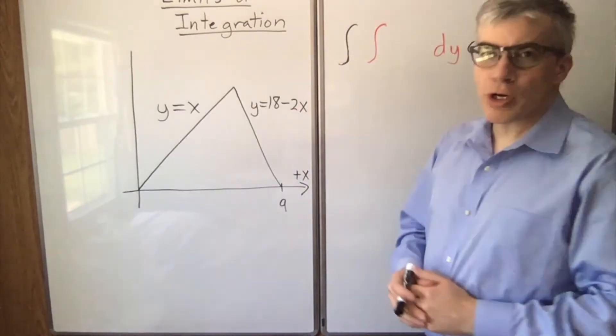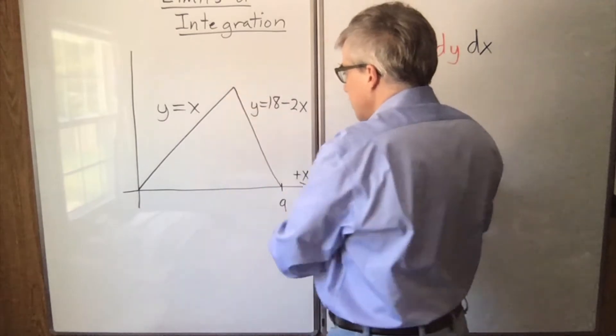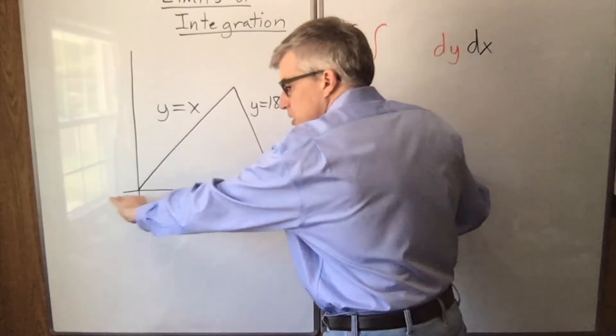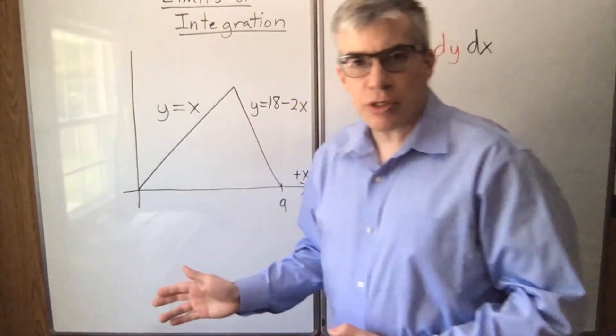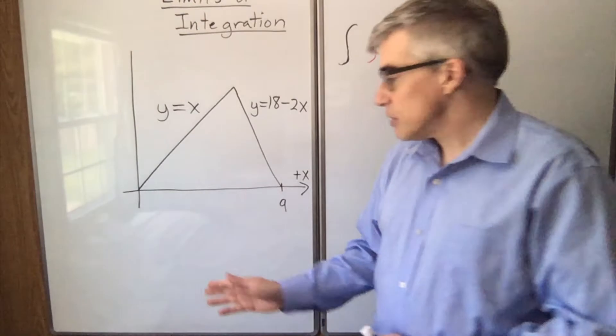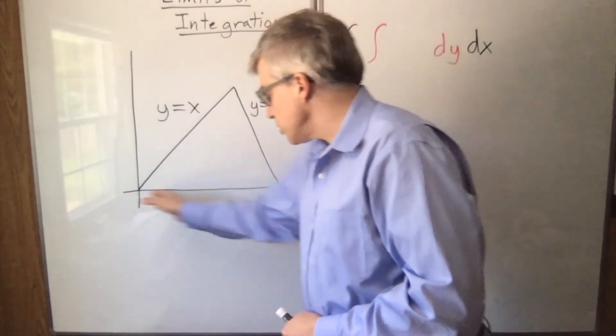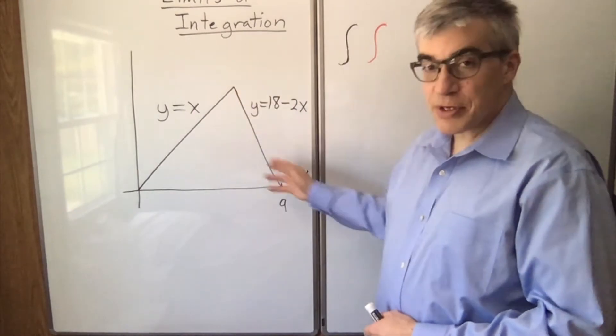Now a slightly more complicated example. We have y equals x, y equals 18 minus 2x, and y equals 0. If we want to integrate over this region and have x be the outer integral, we have a little bit of a problem. We are tempted to just say 0 to 9, but the problem is the upper function is different in two places.